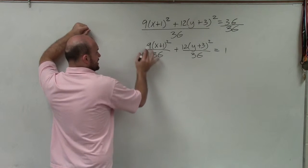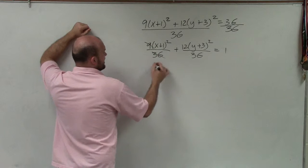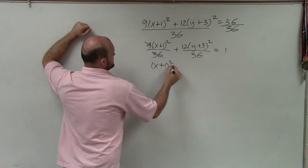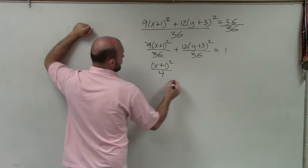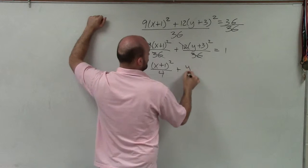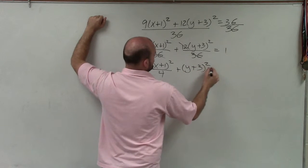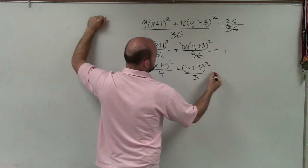Now, I can simplify these fractions. 9 over 36 reduces to (x+1)²/4. Plus this is going to reduce to (y+3)²/3 equals 1.